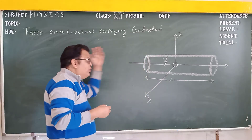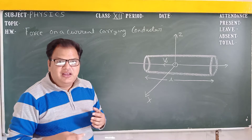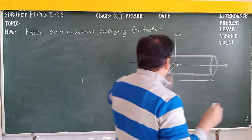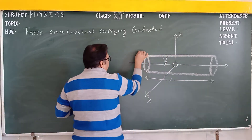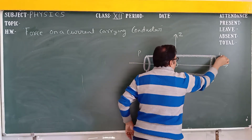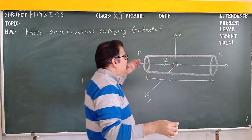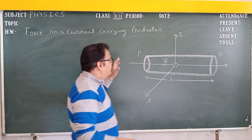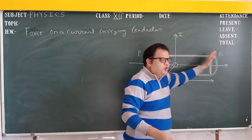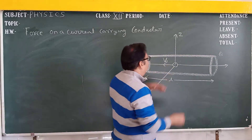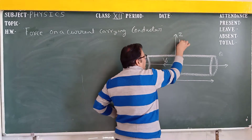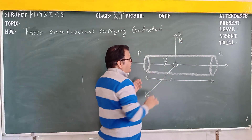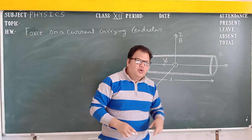Naturally, the force is also upon the charged particles. So, consider this conductor PQ which is placed in the magnetic field, and current is flowing from P to Q. Here is the magnetic field B.